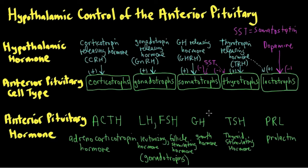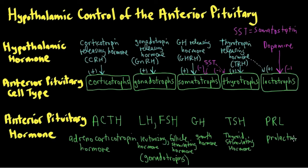The output from these cells will be stimulated by corticotropin-releasing hormone, gonadotropin-releasing hormone, growth hormone-releasing hormone, or thyrotropin-releasing hormone. We're going to focus on systems where the target of the anterior pituitary hormone is an endocrine gland. Adrenocorticotropin hormone targets the adrenal cortex, the gonadotropins target the gonads, and TSH targets the thyroid gland. Those are the three major systems we'll discuss.